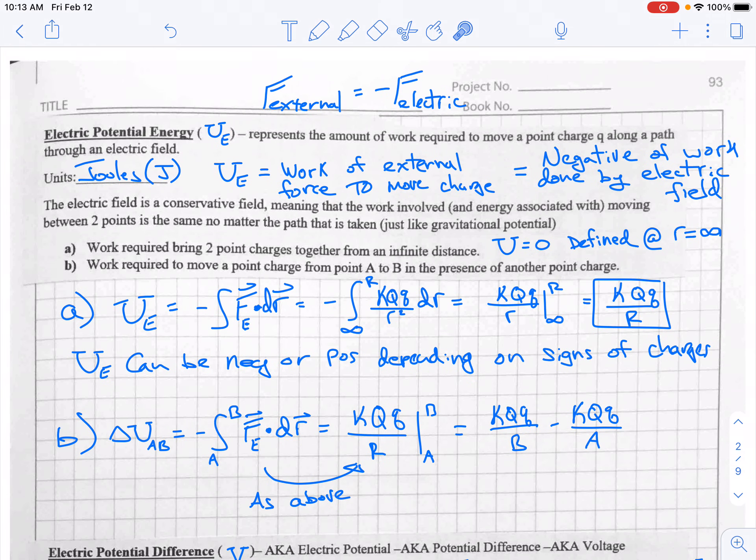It's a simple result then to show that the change in potential energy from A to B, from spot A to spot B, is just the energy at A subtracted from the energy at B. If you're going from A to B, B is your final position, A is your starting position. And delta always means final minus start.